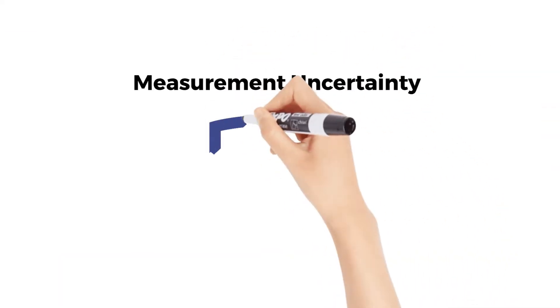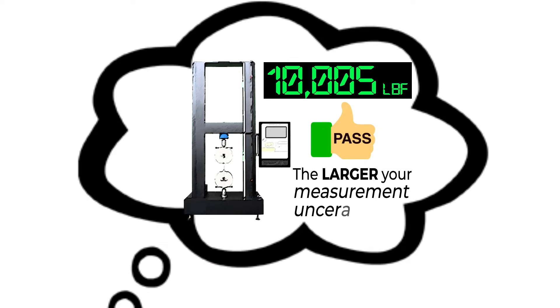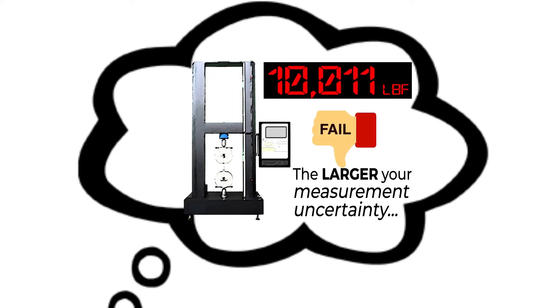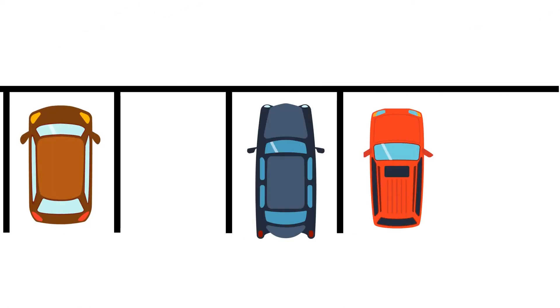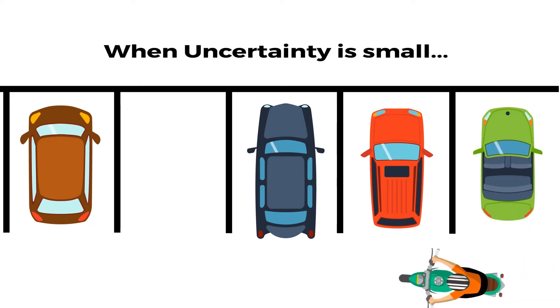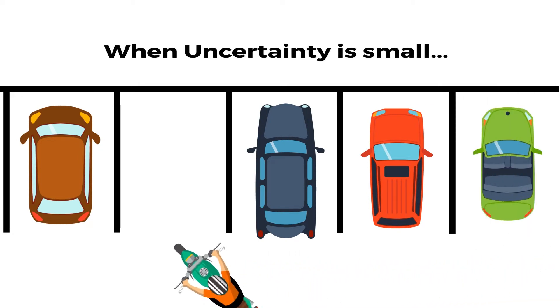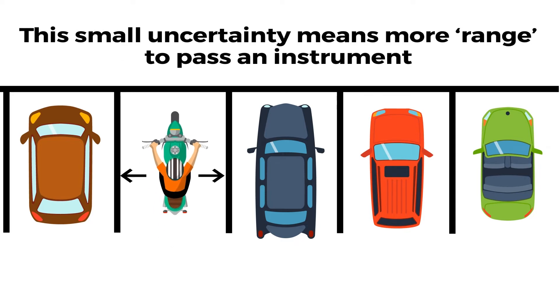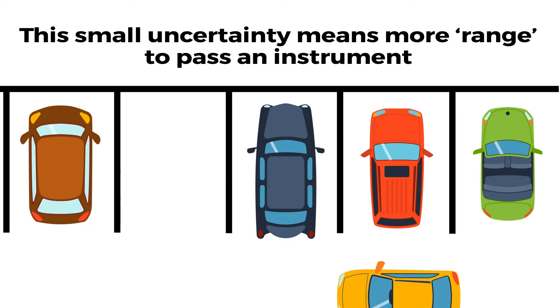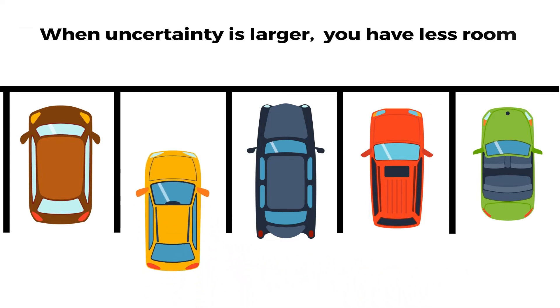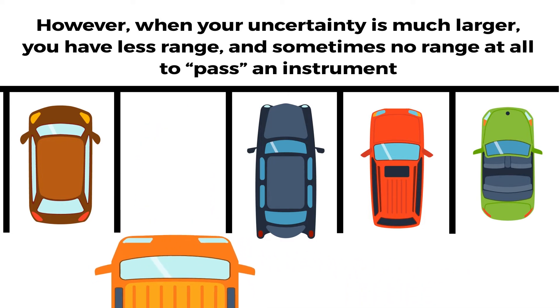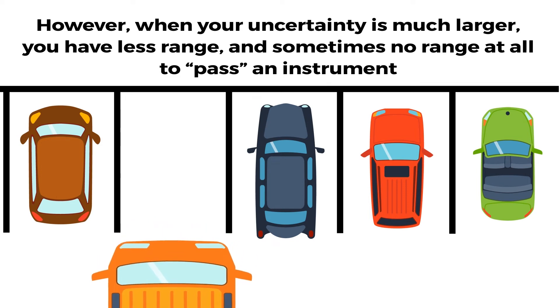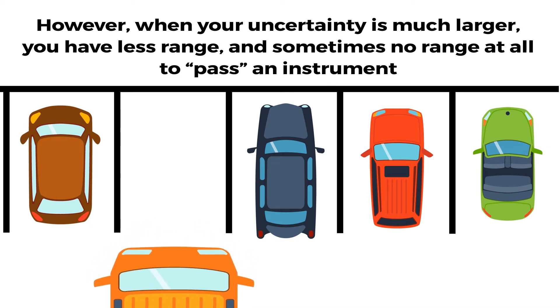Measurement uncertainty also keeps us honest. If we think about making a conformity assessment of pass or fail, the larger your measurement uncertainty, the more likely you are to fail an instrument. Using the analogy of a parking space, when your uncertainty is small, you have a parking space large enough to easily park — meaning more range to pass an instrument. However, when your uncertainty is larger, you have less room, and if the uncertainty is much larger, you have less range and sometimes no range at all to pass an instrument.